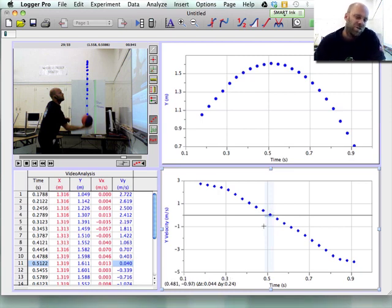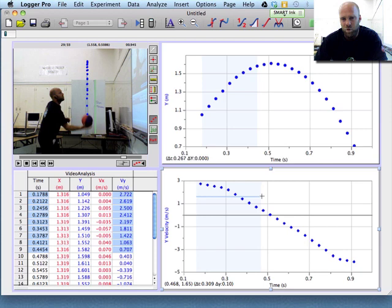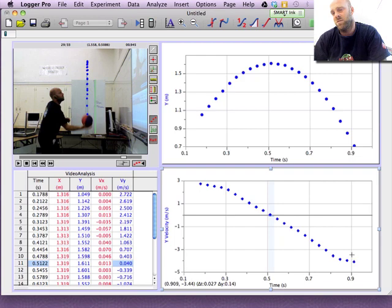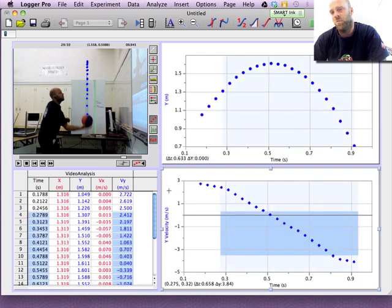when the ball changes direction from moving upwards to moving downwards, from positive velocity upwards to negative velocities downwards, there's got to be a moment there when the velocity is zero. Well, I wonder what the acceleration is at that moment.